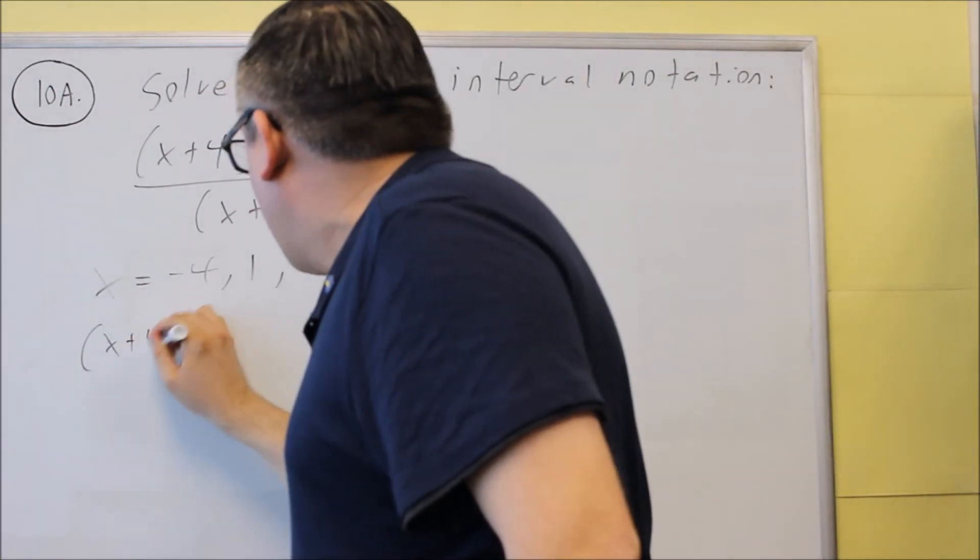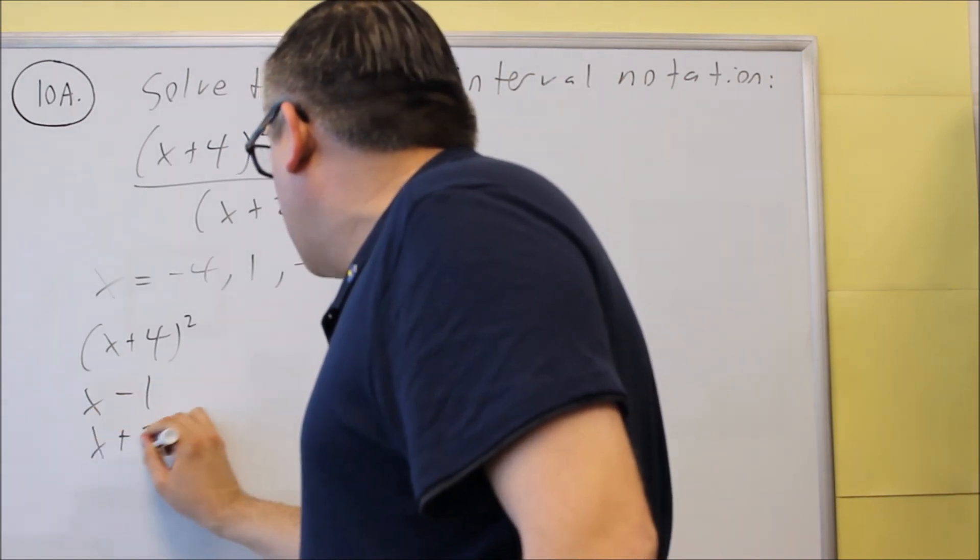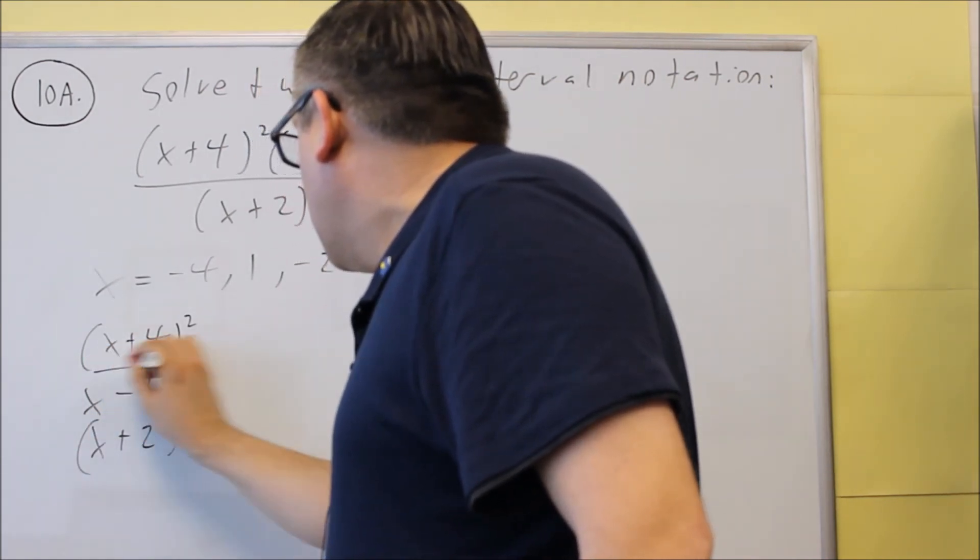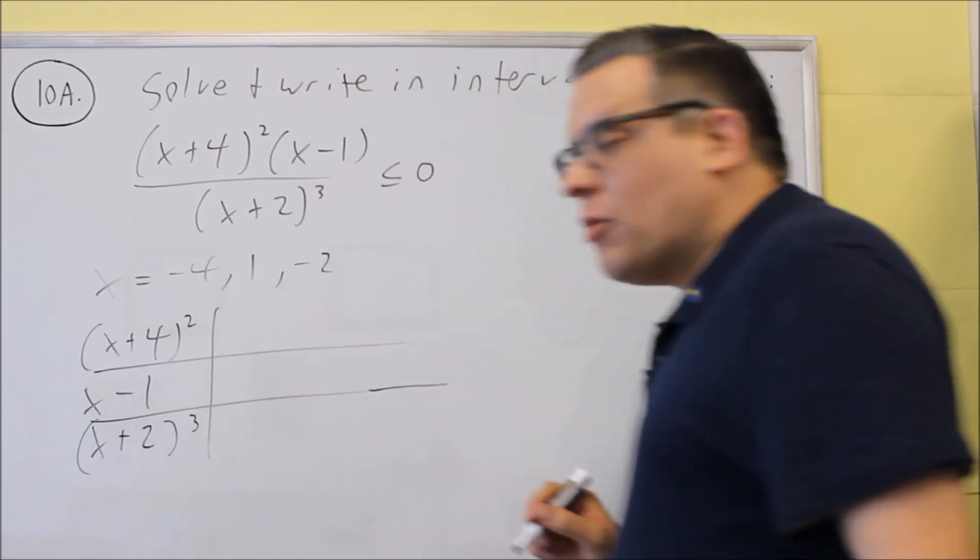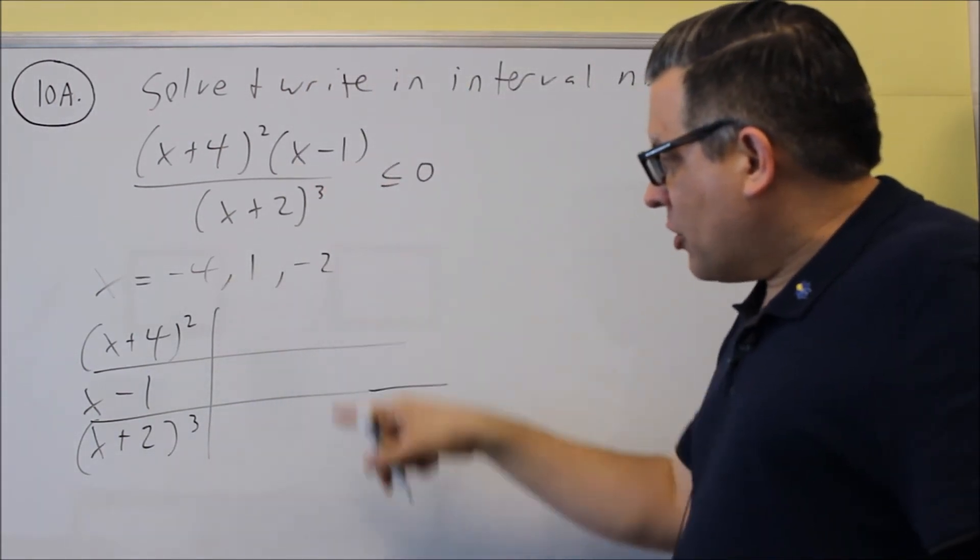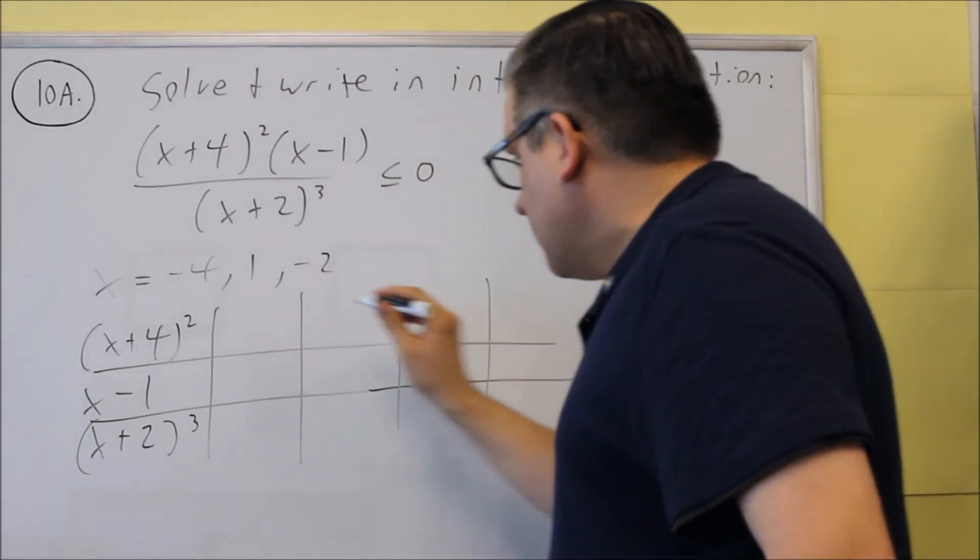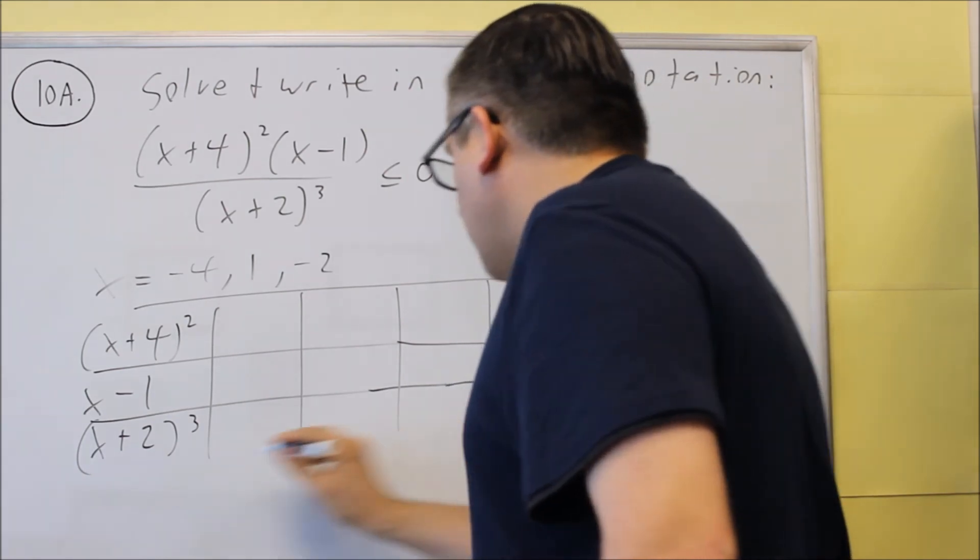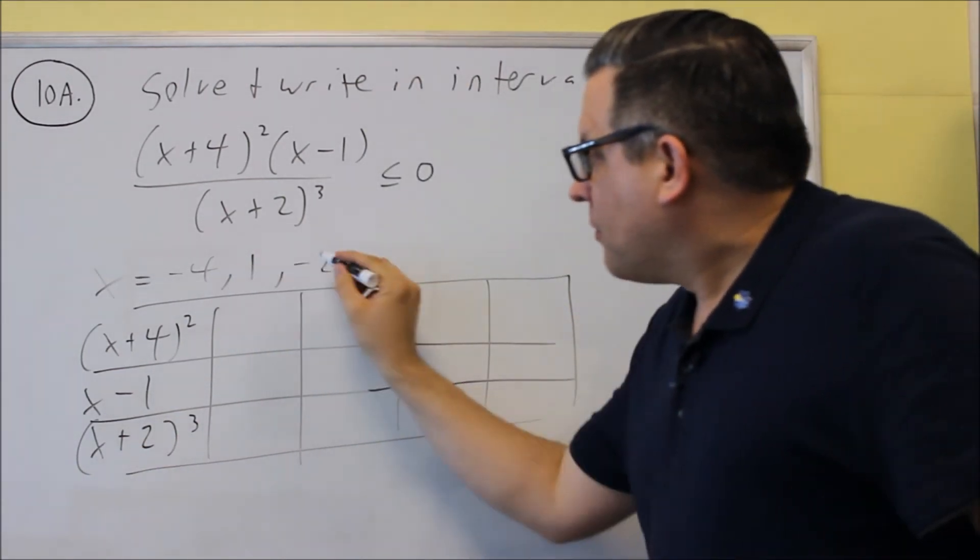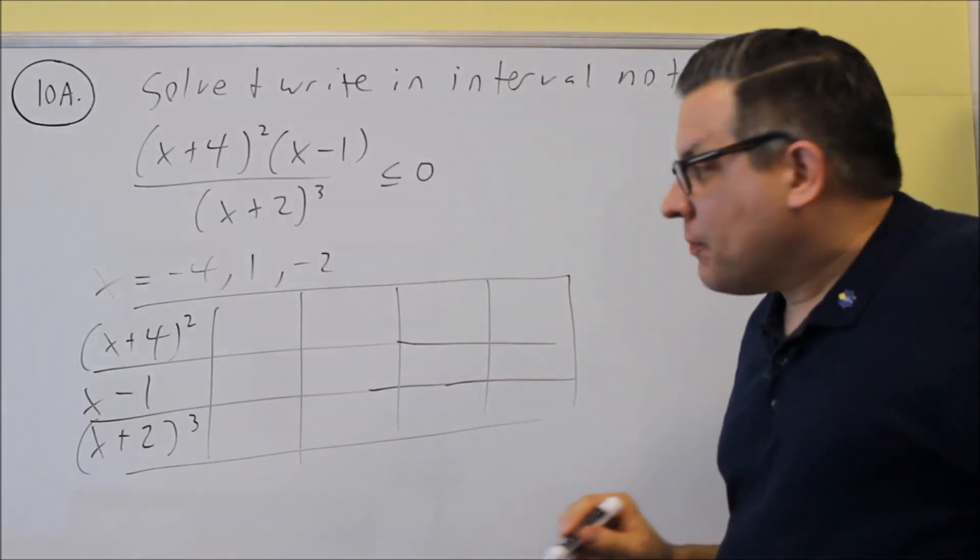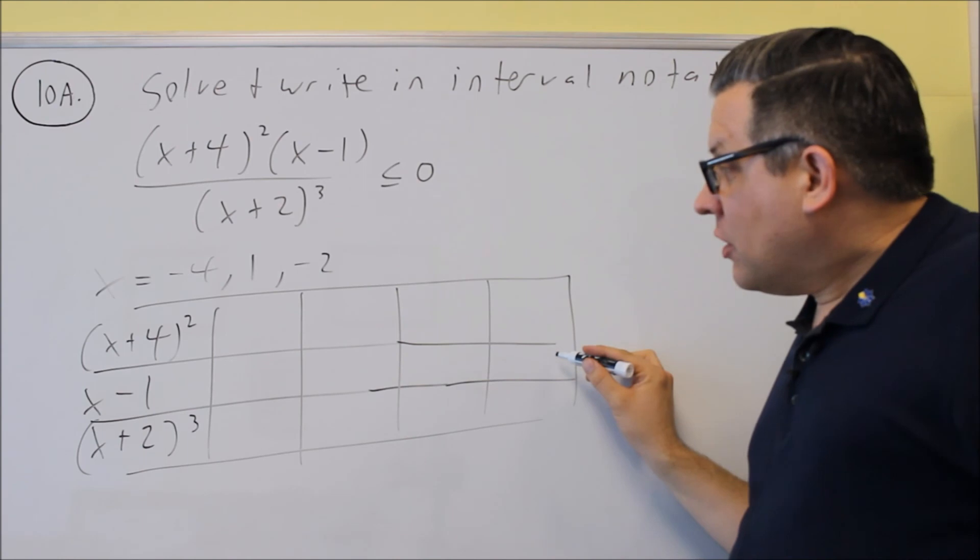So what I mean by that is you're going to do x plus 4 squared, x minus 1, x plus 2 cubed. So we're going to put those in the first column of the table. These numbers, they're going to go here when I split up the columns. You're always going to have one more column beyond the numbers you get here. So since I have three numbers here, that means I've got to have four columns total down below.